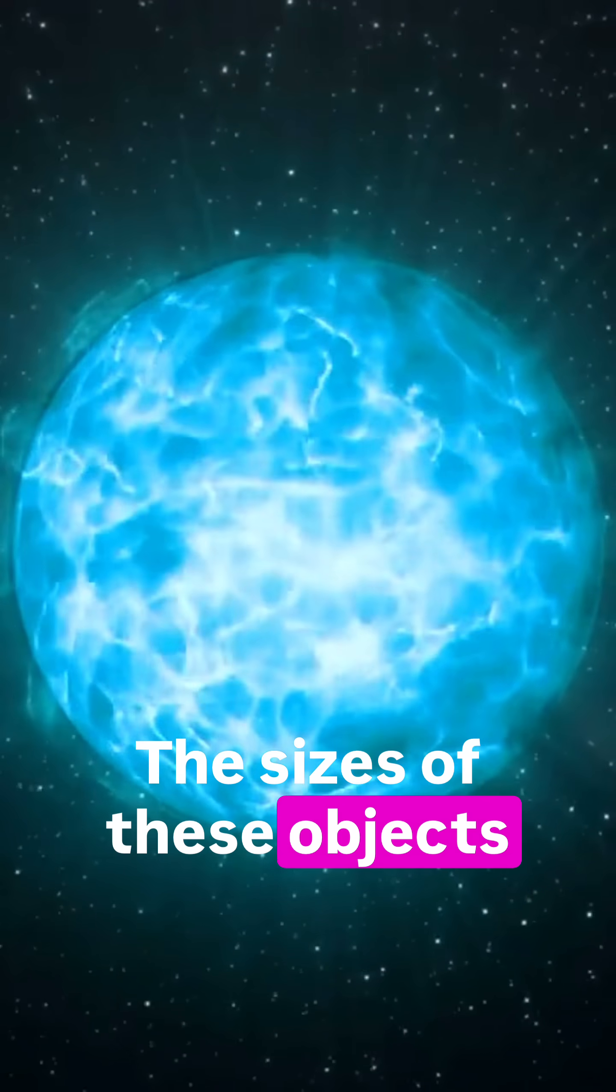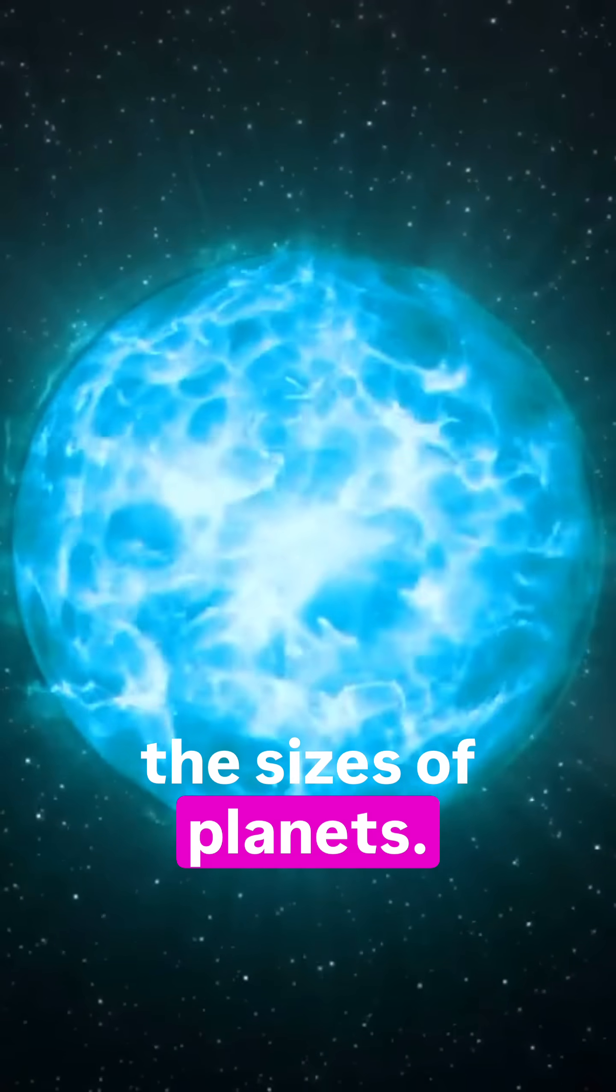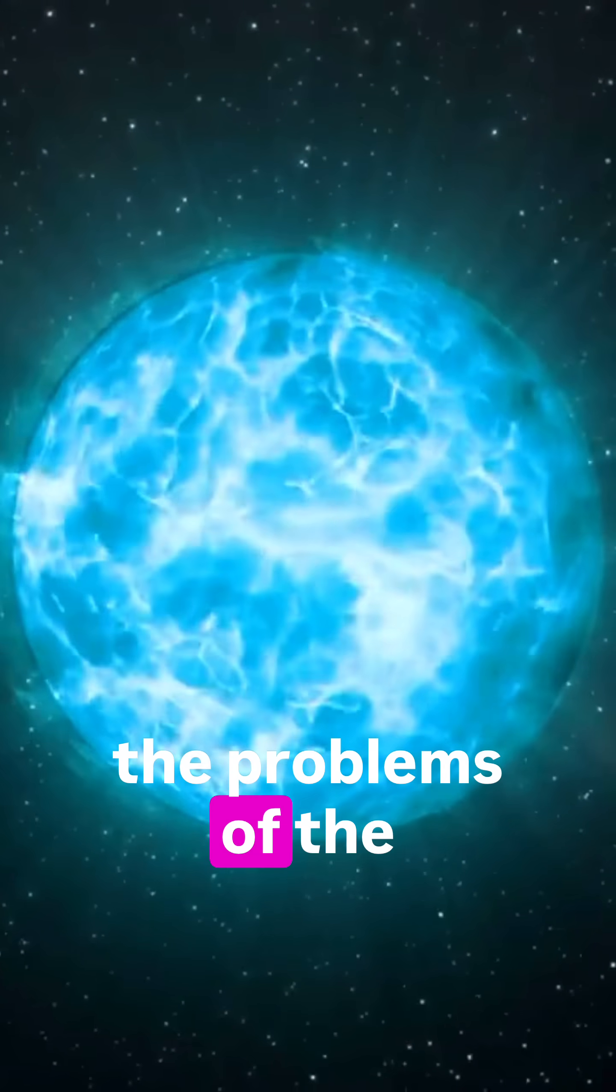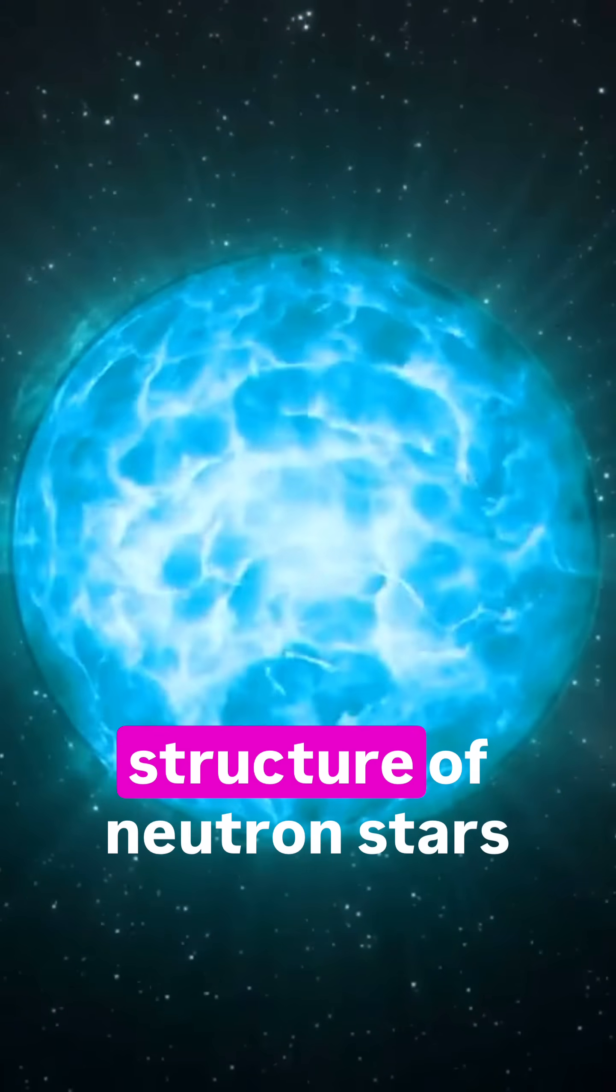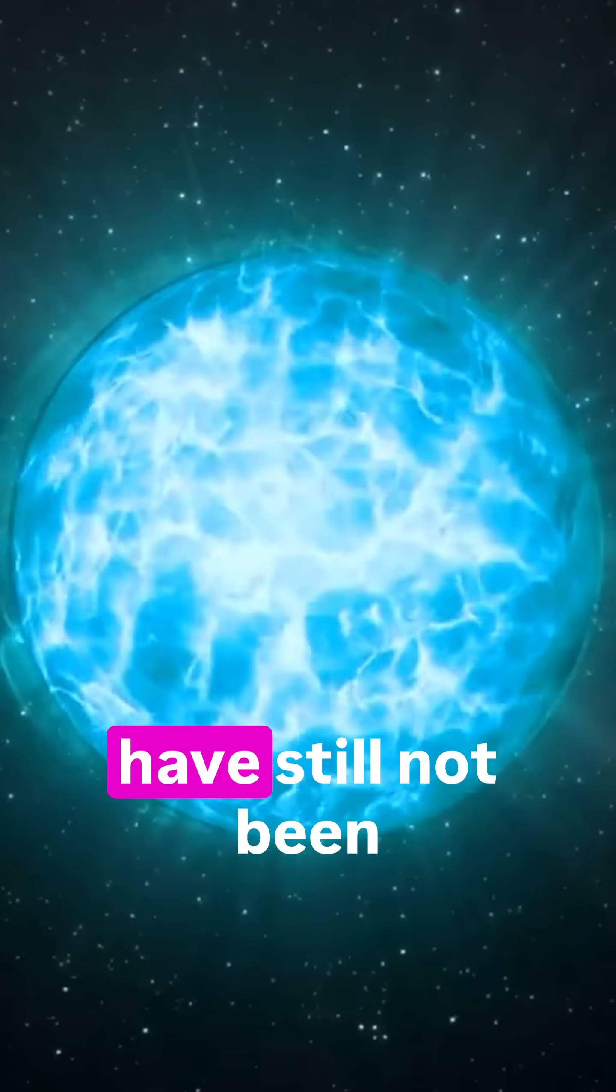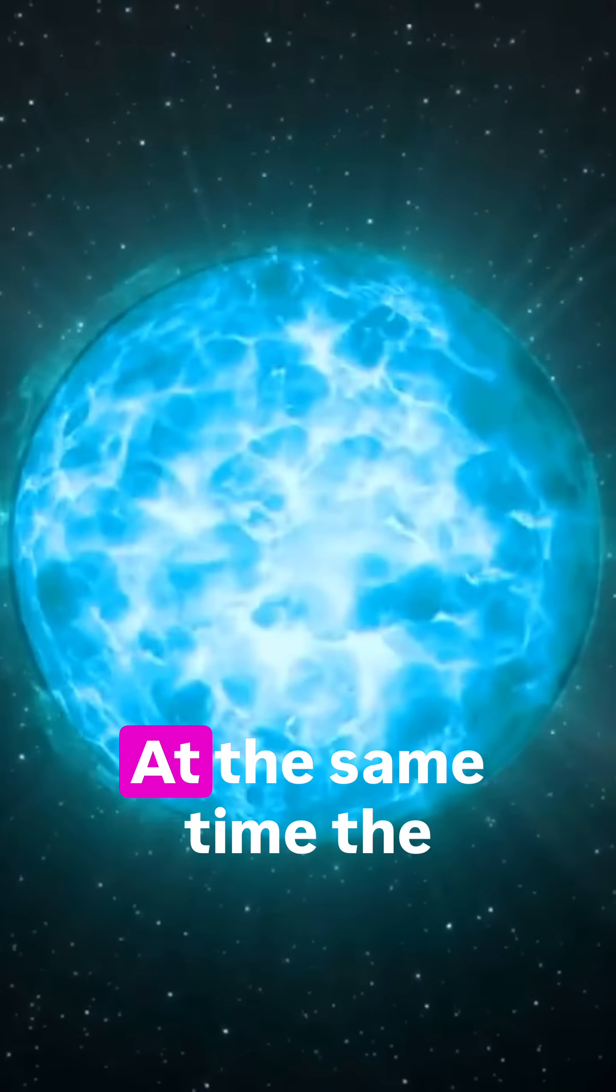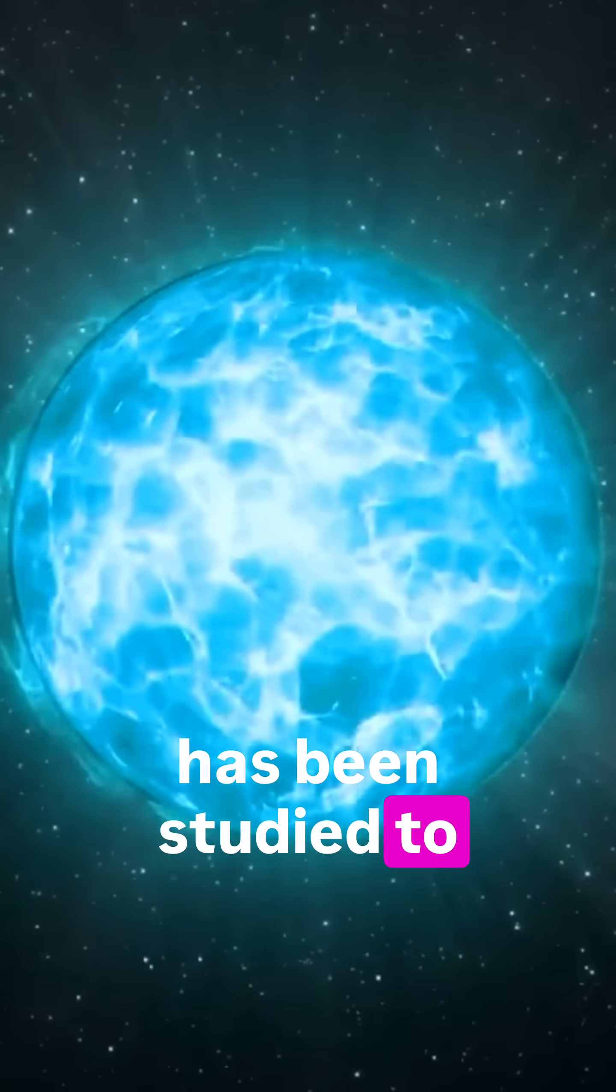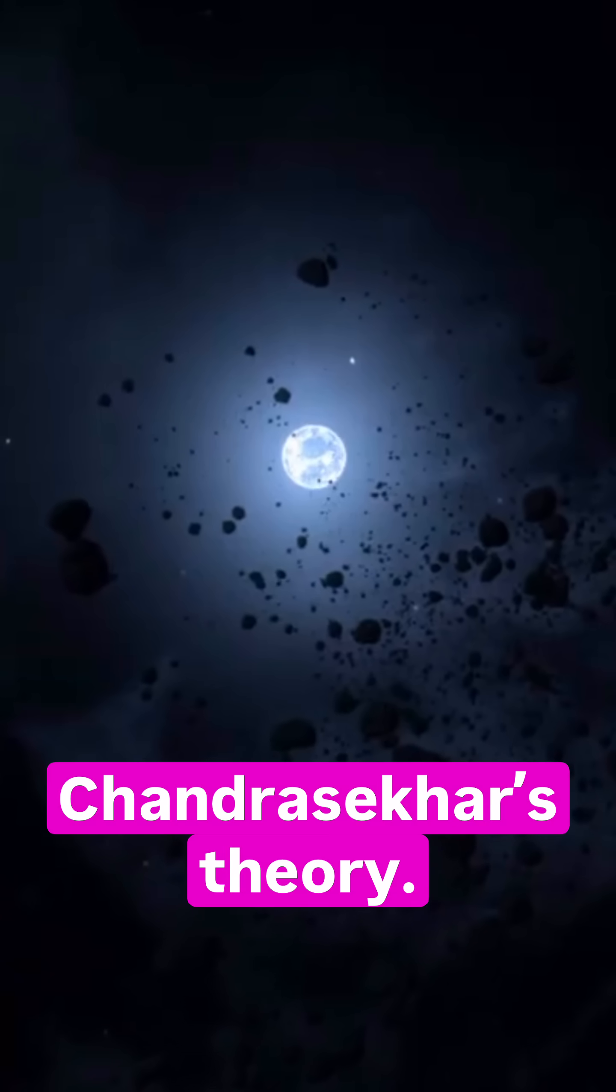The sizes of these objects are comparable to the sizes of planets. But the conditions there are so extreme that the problems of the equations of state and the internal structure of neutron stars have still not been solved. At the same time, the structure of white dwarfs has been studied to some extent based on Chandrasekhar's theory.